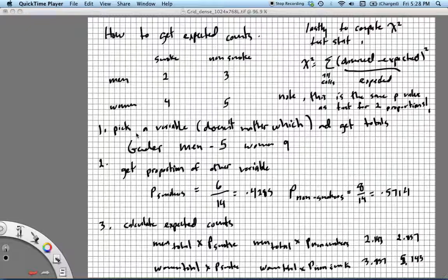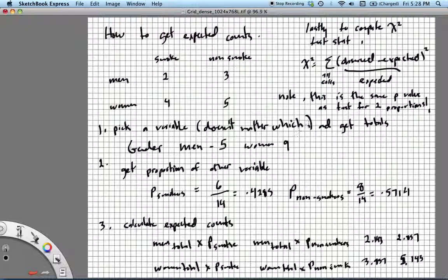Well, what you're going to do is just pick one of the variables. It doesn't really matter which. And you're going to get the totals. So let's say we pick the gender variable. We know that total, there were five men, because there were two that smoked and three that didn't. So there were five, and along with that, there were nine women.